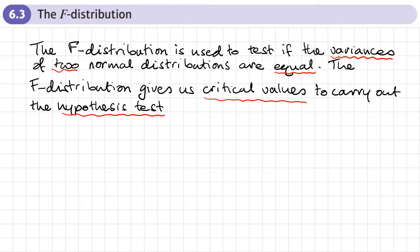This is the third section of chapter 6, further hypothesis tests, and this section is on the F distribution. The F distribution is used to test if the variances of two normal distributions are equal. The F distribution gives us critical values to carry out the hypothesis test. In this section we're not going to be carrying out the hypothesis test; we're just going to be looking at how we can find these critical values and what we need to look out for in the F distribution.